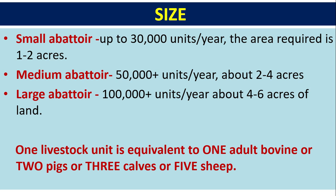Depending on size, abattoirs are classified as small, medium, or large. A small abattoir handles up to 30,000 units per year and requires 1–2 acres. A medium abattoir handles 50,000+ units per year and requires 2–4 acres. A large abattoir handles 1 lakh+ units per year and requires 4–6 acres. One livestock unit equals one adult bovine, two pigs, three calves, or five sheep.